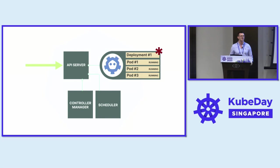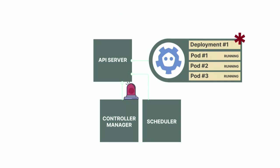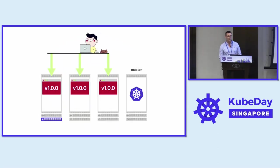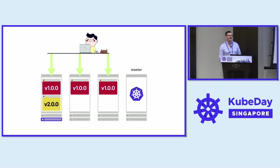Who is listening for changes to deployments? The controller manager. It notices something has changed and creates a new pod in pending state. Who is listening for pending pods? The scheduler assigns a node to it — it is scheduled. Then the kubelet picks up the work, asks the control plane for the new pod, and delegates creating the container to the container runtime, eventually creating the pod.